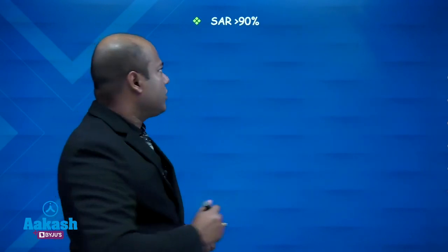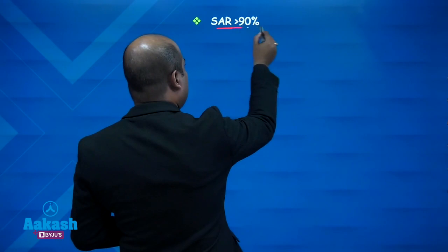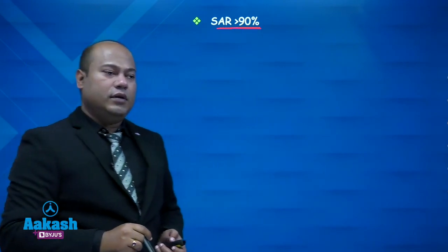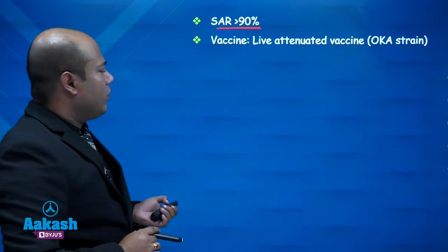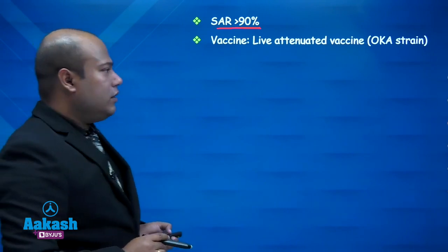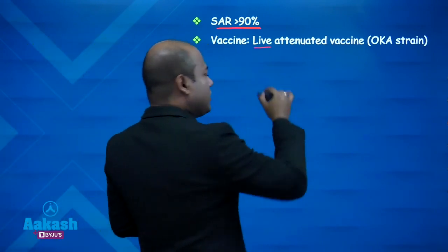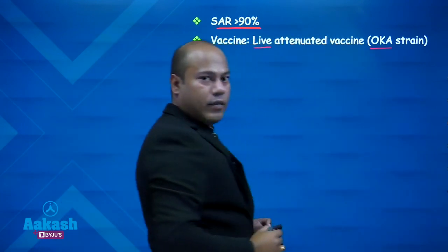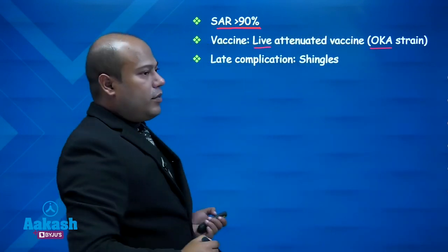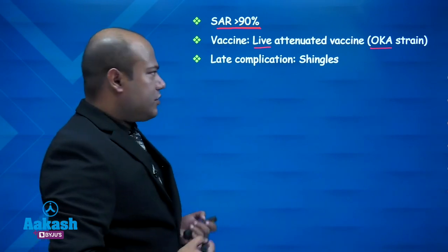The secondary attack rate of chickenpox is more than 90 percent — a very important figure that has been asked in NDA exams. A vaccine is available; it is a live vaccine and the strain used is the Oka strain, so it is also called the Oka vaccine.